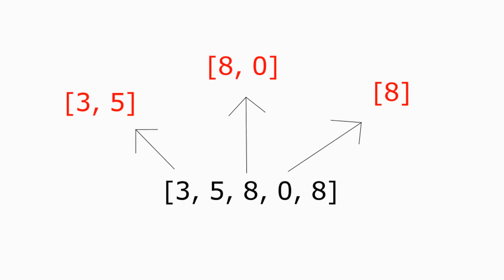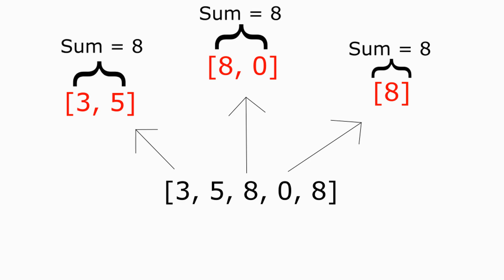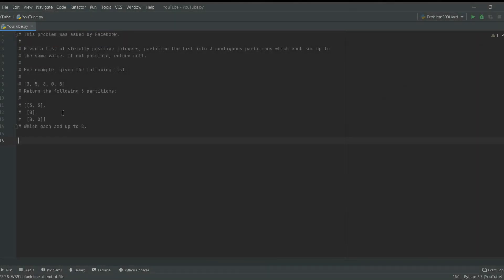Given a list of strictly positive integers, partition the list into three contiguous partitions which each sum up to the same value. If not possible, return null. For example, given the following list, return the three partitions 3 5 8 and 8 0 which all add up to 8. The sum of this big array is 24, so we split it into three partitions each having the sum of 8. You have to create a function that returns an array of partitions like so.